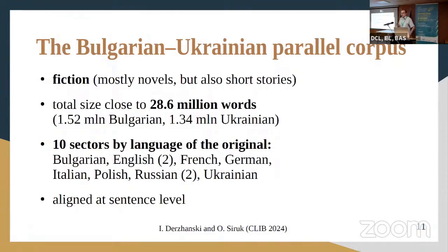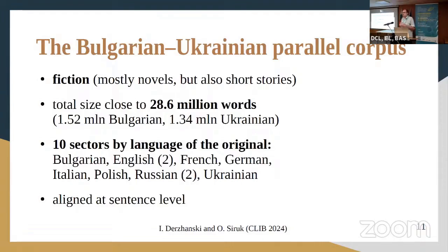Which is why we decided to look at Bulgarian in close parallel with Ukrainian — what correspondences do these two grammatical forms of Bulgarian have in Ukrainian? For this, we use material from our Bulgarian-Ukrainian parallel corpus. Very briefly, it is a parallel corpus composed of fiction, mostly novels. At present its total size is over 28 million words jointly in the two languages — 15.2 million Bulgarian and 13.4 million Ukrainian. It's composed of 10 sectors according to the language of the original, and the sectors are of the same size.